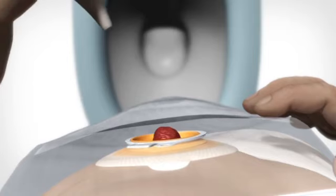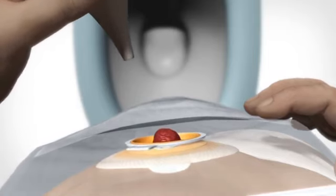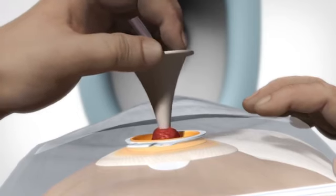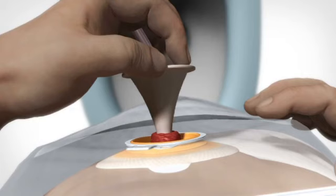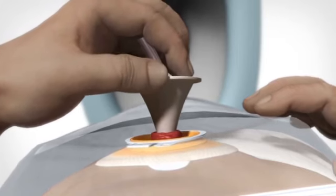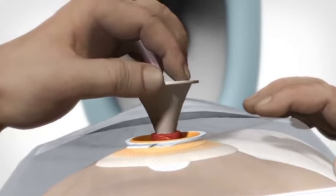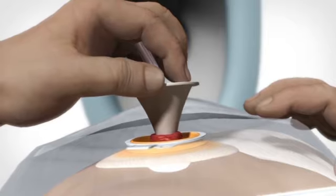If necessary, lubricate the cone with water before use. Then insert the tip of the cone in the stoma through the top of the sleeve. Keep the cone in the right position in the stoma with one hand. You might want to wrap the top of the sleeve around the tube to avoid potential soiling.